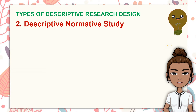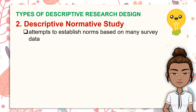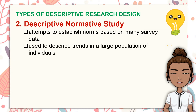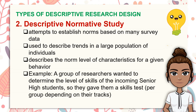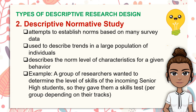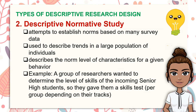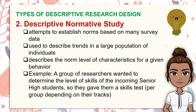Second is a descriptive normative study. This type attempts to establish norms based on a large number of survey data. It is used to describe trends in a large population of individuals and describes the norm level of characteristics for a given behavior. The results of the study should be compared with the norm. For example, a group of researchers wanted to determine the level of skills of incoming senior high students, so they gave them a skills test per group depending on their tracks. The result was compared with the standard range of scores to describe their skill level.